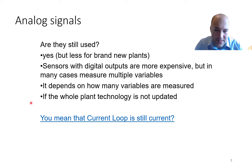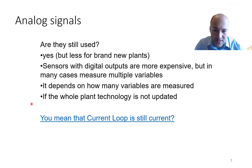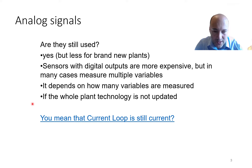Analog signals are also used when you need to replace only part of your technology without updating the whole plant. In that case it's typical to use the same signals as before, because then you don't need to change the wiring or test all the data transfer technology. So analog signals are still current and used in industry, though less so with brand new technologies.